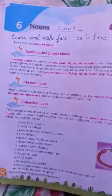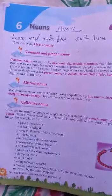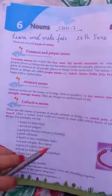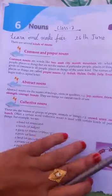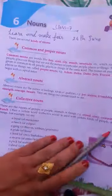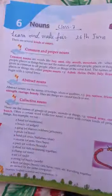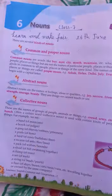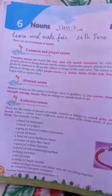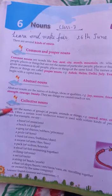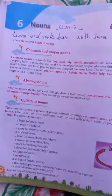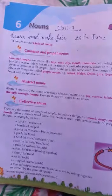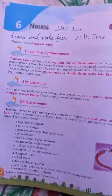Now, collective nouns. Collective nouns are the names of a group of people, animals, or things — such as crowd, army, committee, flock. These refer to groups of persons, animals, or things. Often a certain collective noun is used with certain kinds of people, animals, or things.